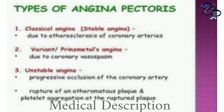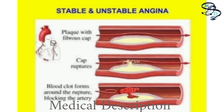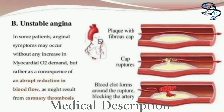The most prominent ones are stable angina, also known as angina pectoris, and unstable angina. Unstable angina is characterized by unexpected chest pain during rest. Unlike stable angina, unstable angina occurs unpredictably, changes in frequency, and may get worse over time.